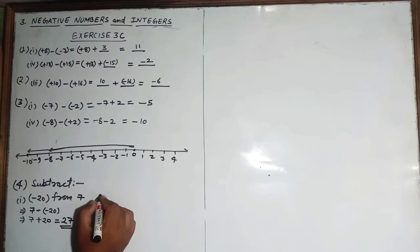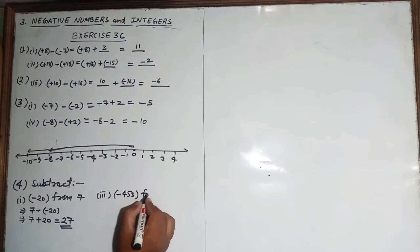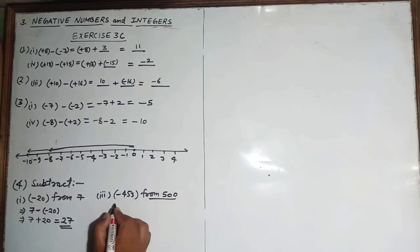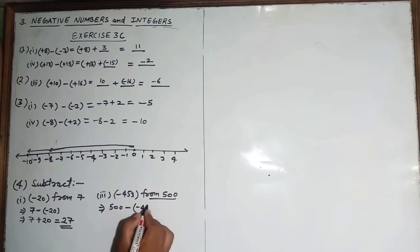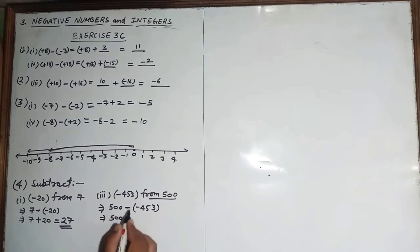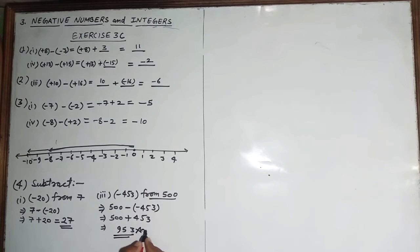One more part — the third part: subtract minus 453 from 500. You will write 500 first, then minus minus 453. This minus sign is for subtraction and this minus sign is given in the question. So 500 minus into minus becomes plus 453. So 500 plus 453: writing digit by digit — 3, 5, and 5 plus 4 is 9 — giving 953 as our answer.